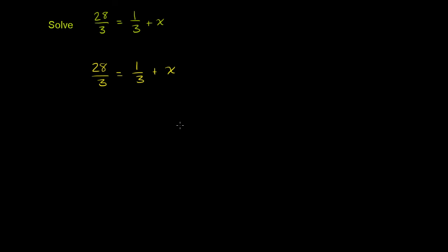Like always, we want to isolate our variable. In this case, our variable is x on one side of the equation. We have x on the right-hand side, and we can isolate it if we get rid of this 1/3. The best way to get rid of that 1/3 is to subtract 1/3 from the right-hand side.